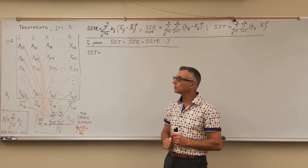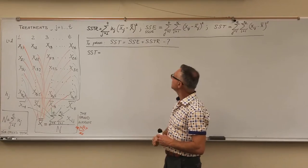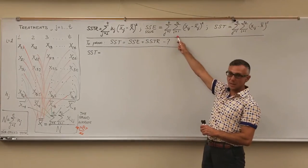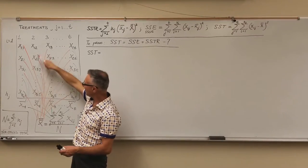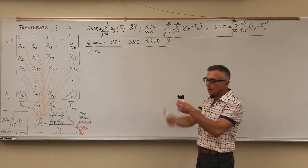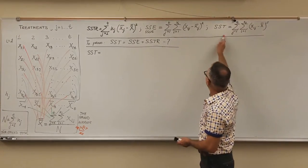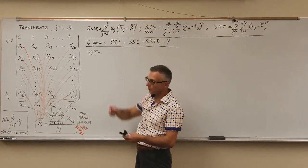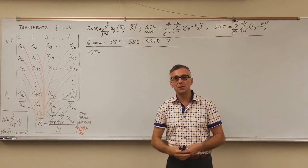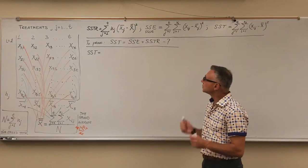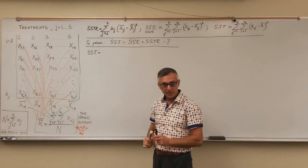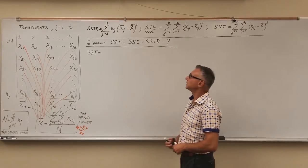We discussed grouping data with weights earlier. But we do not use weights for SSE — because of the double summation there, we take each individual element from the array and all elements are already exhausted. All the sizes are already taken into account. That's why there's no need to introduce weights for SSE, only for SSTR. Now let's get down to business. SST is equal to SSE plus SSTR: the total variance consists of those two components.